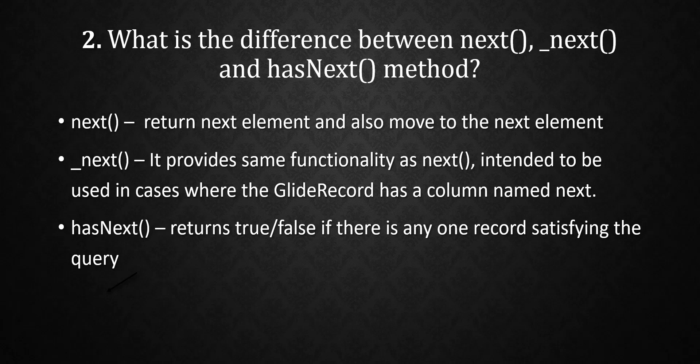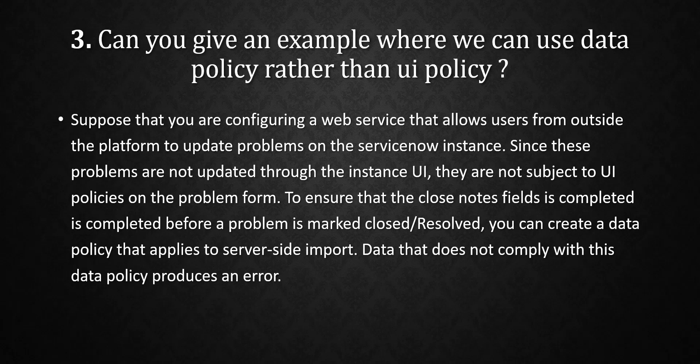The hasNext() method returns true or false depending on whether there is any record that satisfies the query. If we get any record, it returns true; otherwise it returns false. So hasNext() returns true if there is at least one record satisfying the query.